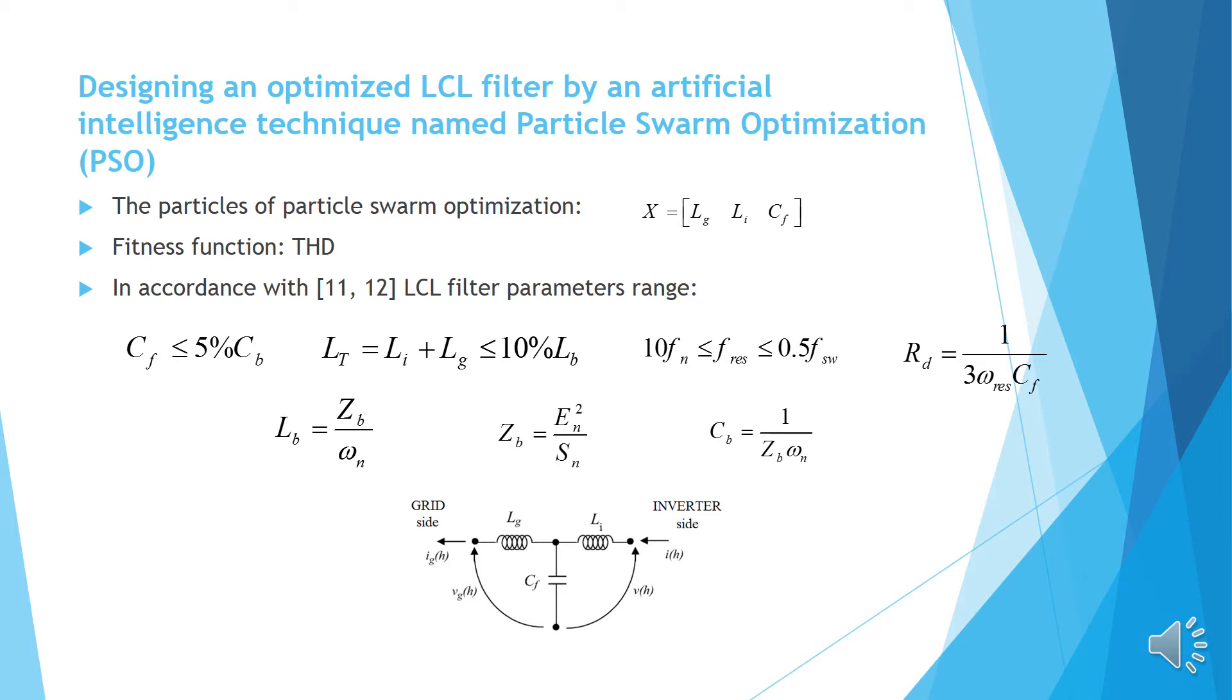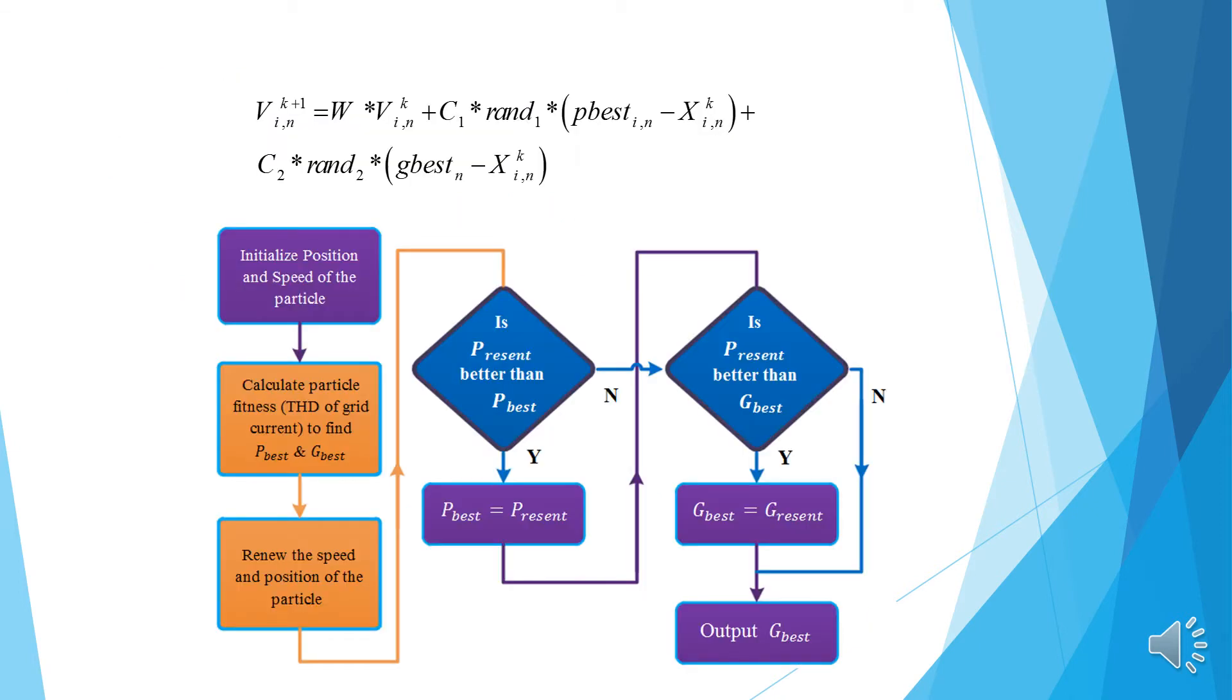Fitness function: the total harmonic distortion or THD frequency of AC side-line current. To achieve good filter performance, a low THD current is required. In accordance with references 12 and 11, LCL filter parameter ranges are in accordance with the following formulas. PSO algorithm renews their position and velocity to search the whole state space by following formula. By applying these cases in the PSO algorithm system in the form of flowchart with creating link between M-file of PSO algorithm and Simulink in MATLAB containing information of the simulation, filter parameter is extracted.